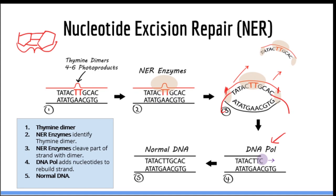Here we can see a visual illustration of the steps involved in NER. First, a bulky DNA lesion such as a thymine dimer or 4-6 photoproduct is detected by specialized NER enzymes which scan DNA. For example, here I have drawn a thymine dimer. A thymine dimer is an interaction between two adjacent thymines on the same strand — this is not normal, as thymines and all nucleotides should only interact with the nucleotide on the other strand.